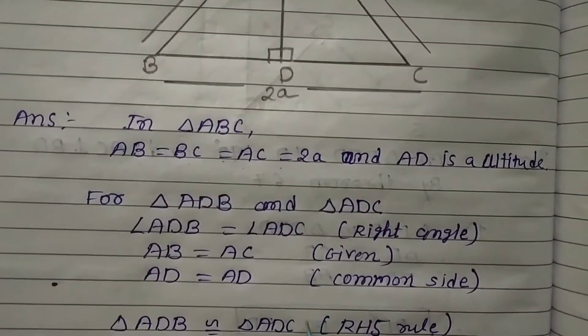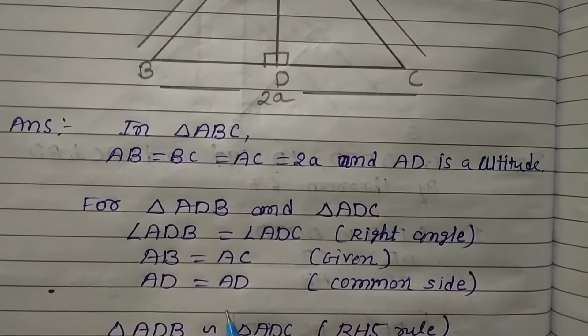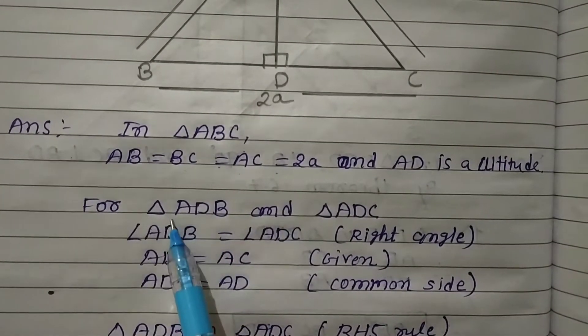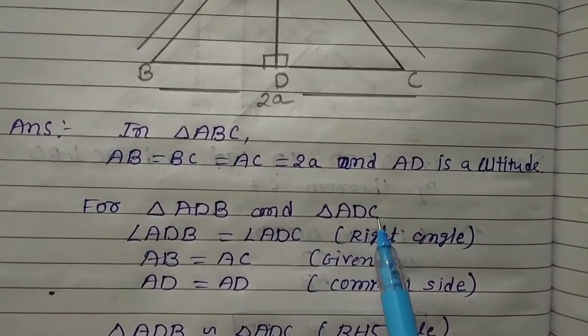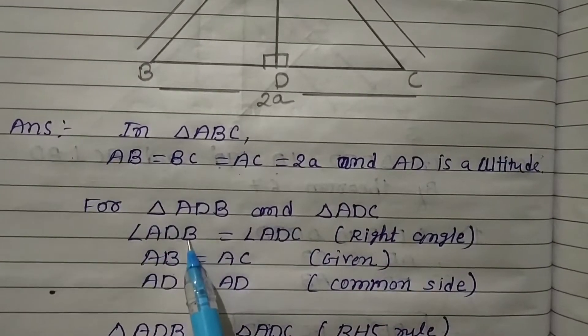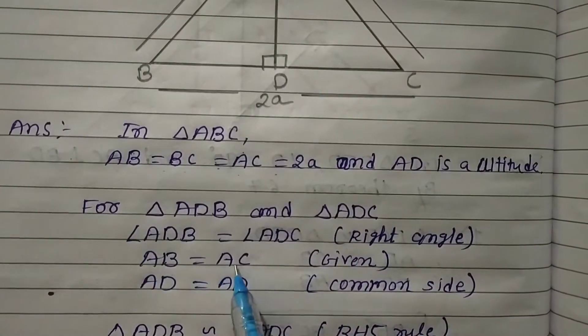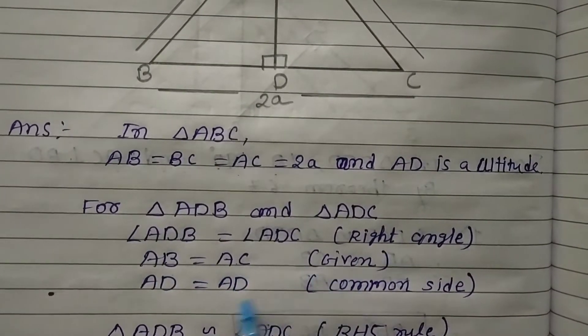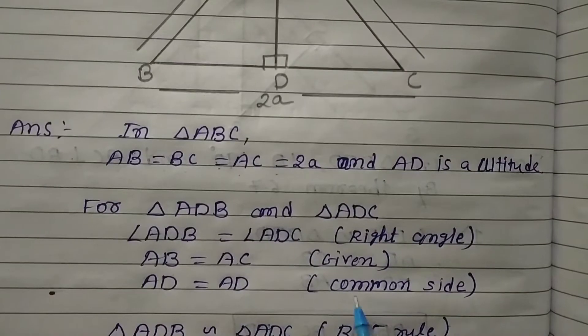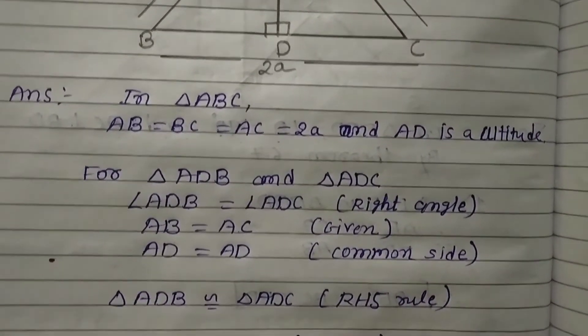We have to prove them congruent. For triangles ADB and ADC: angle ADB = angle ADC (right angles), AB = AC (given), and AD = AD (common side). So by RHS rule, triangle ADB is congruent to triangle ADC.